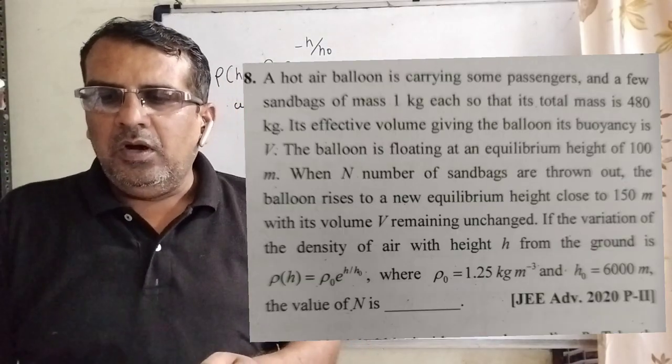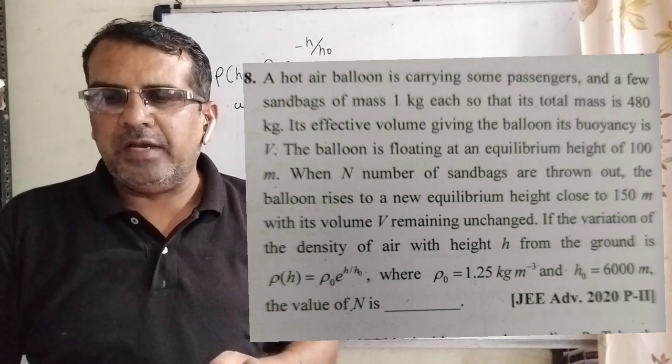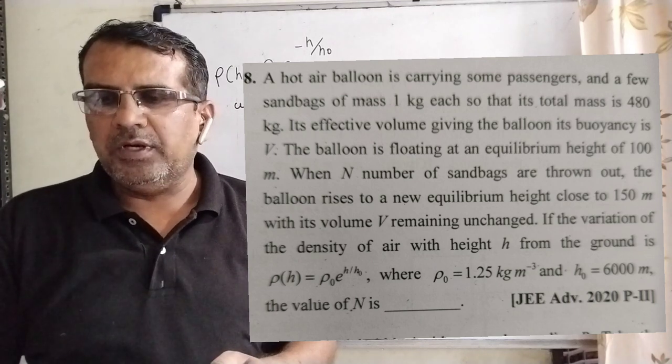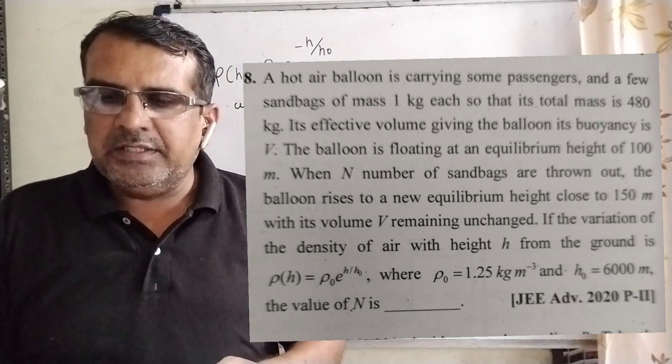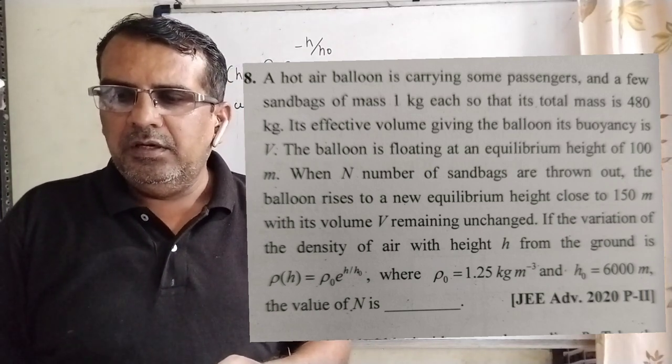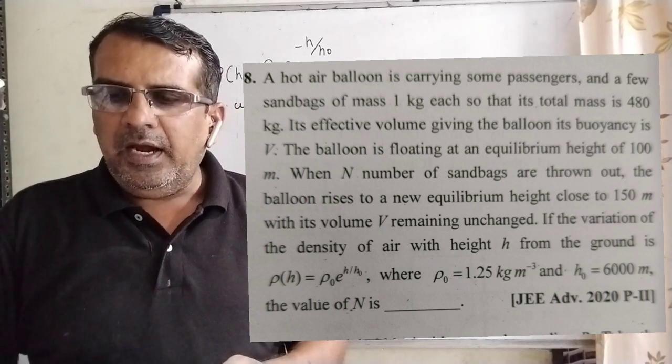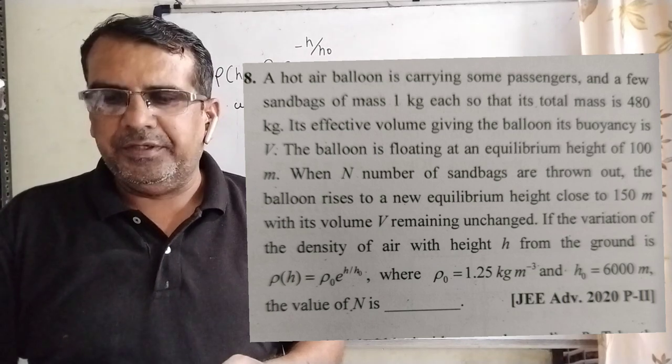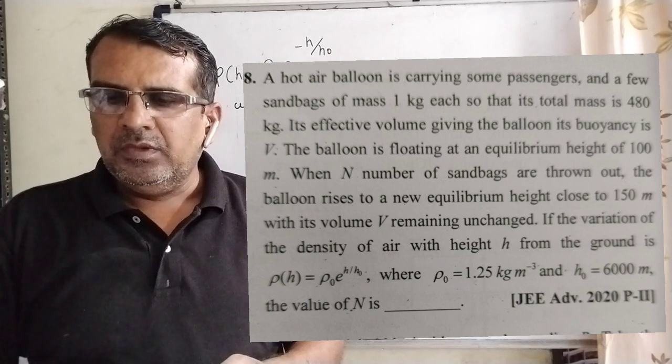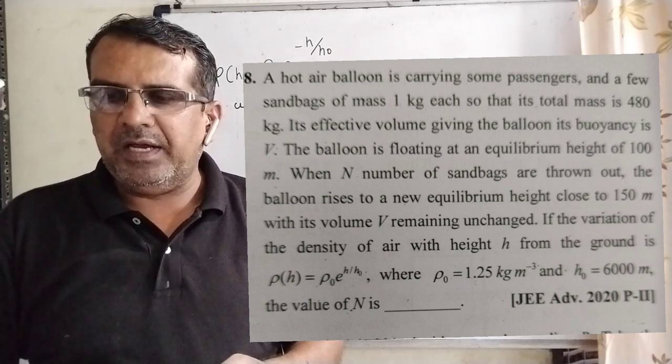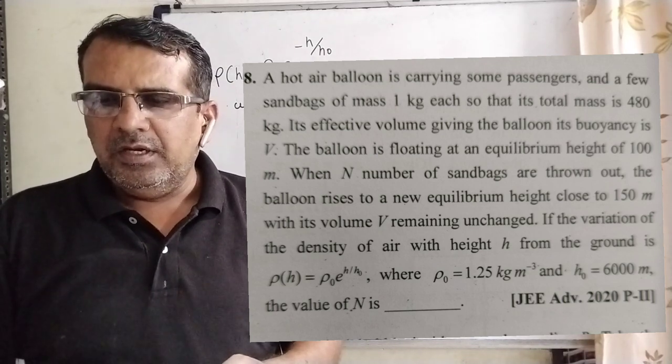The question is here. A hot air balloon is carrying some passengers and a few sandbags of mass 1 kg each, so that its total mass is 480 kg. Its effective volume giving the balloon its buoyancy is V. The balloon is floating at an equilibrium height of 100 m. When N number of sandbags are thrown out, the balloon rises to a new equilibrium height close to 150 m with its volume V remaining unchanged.